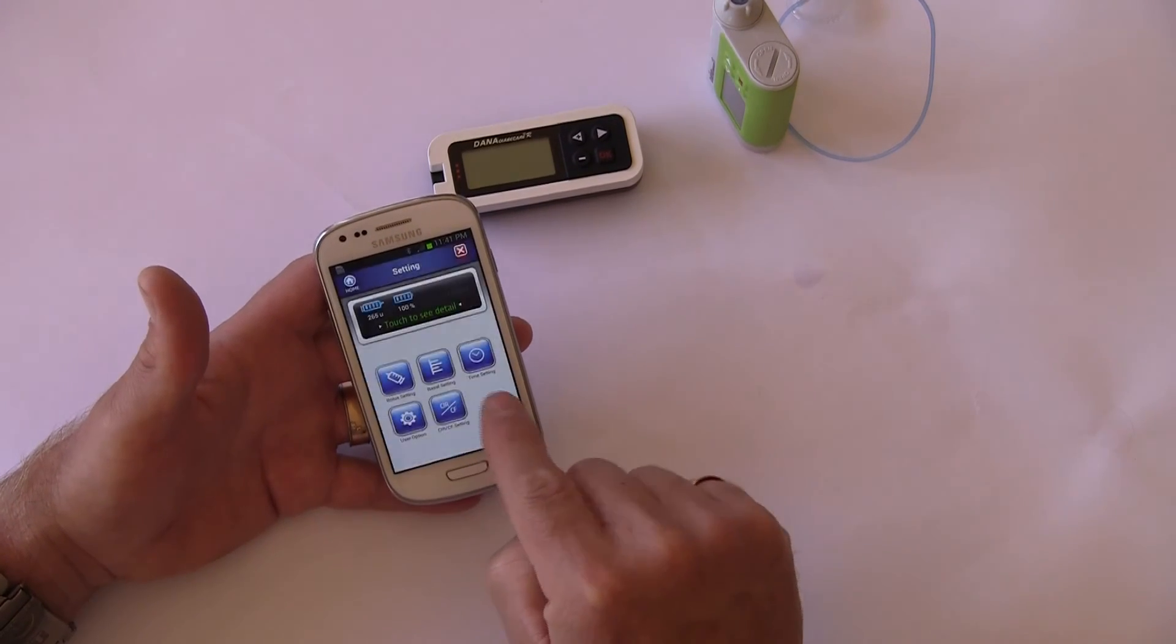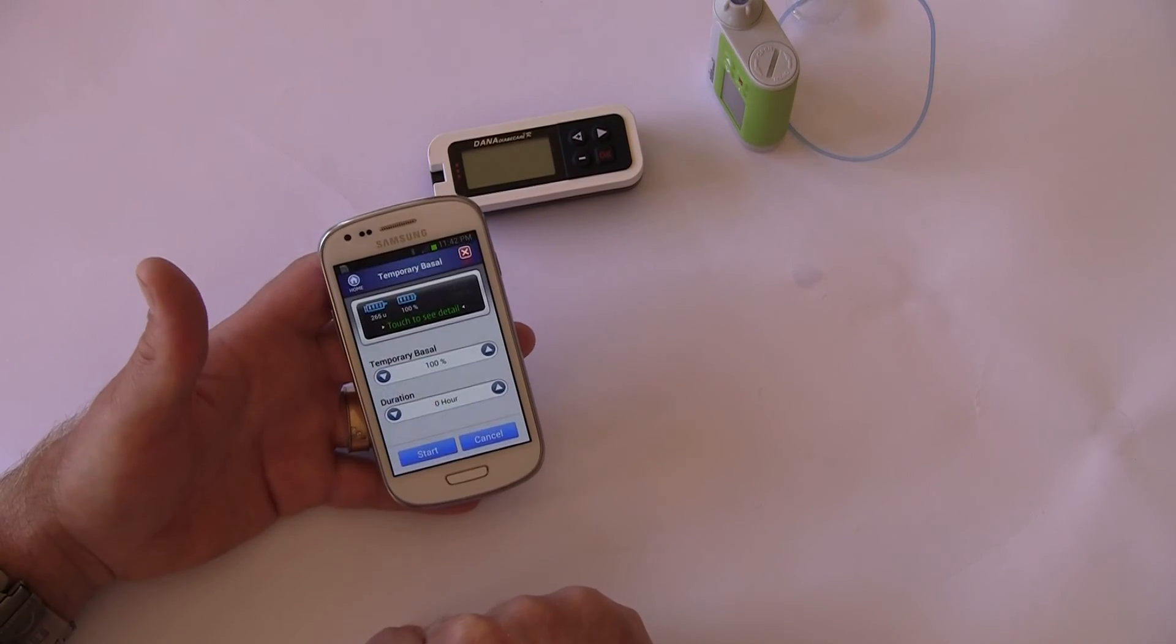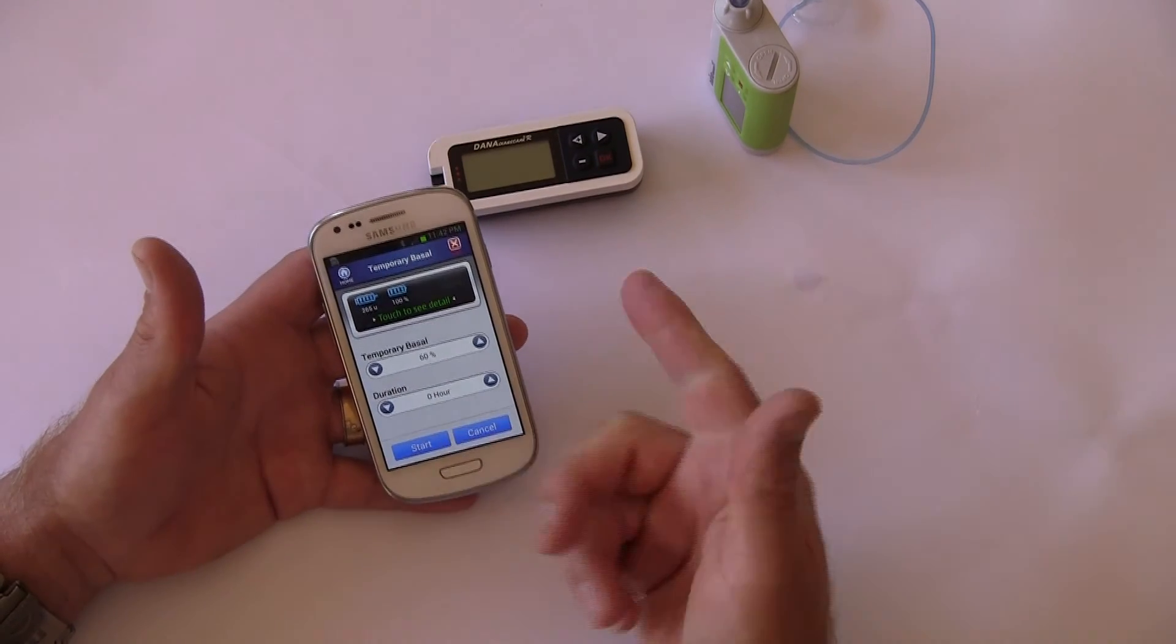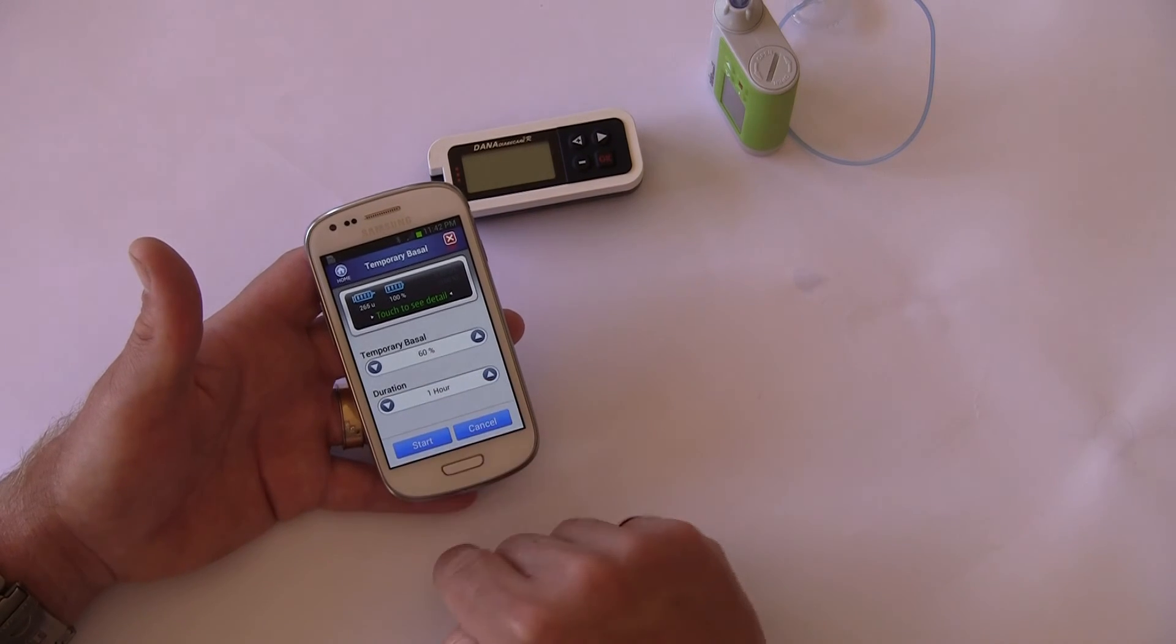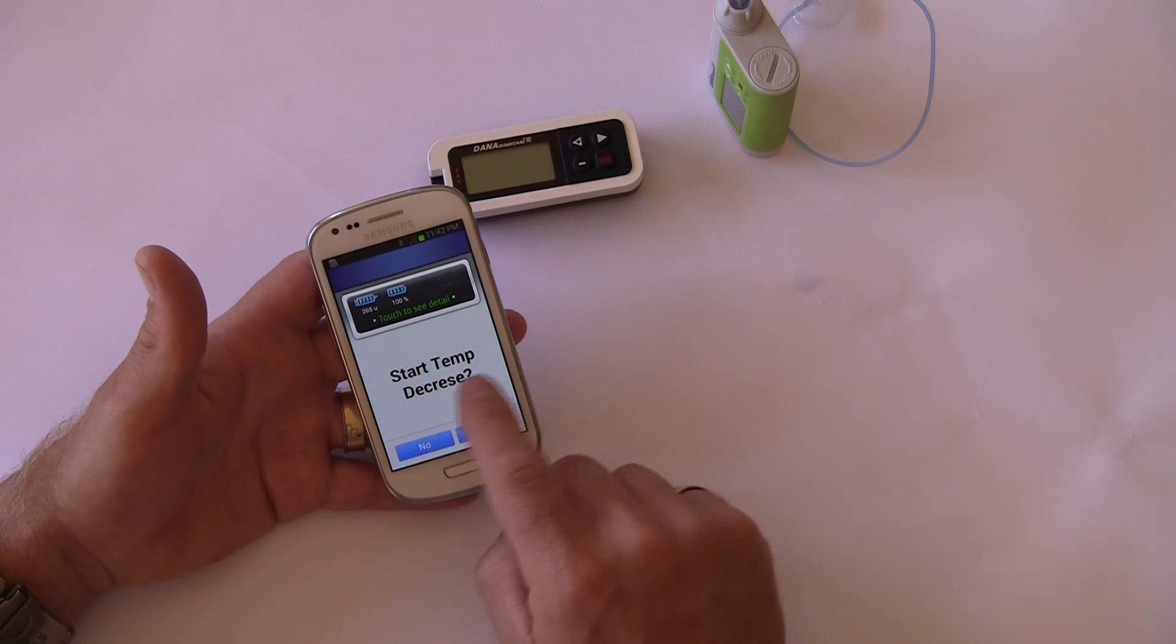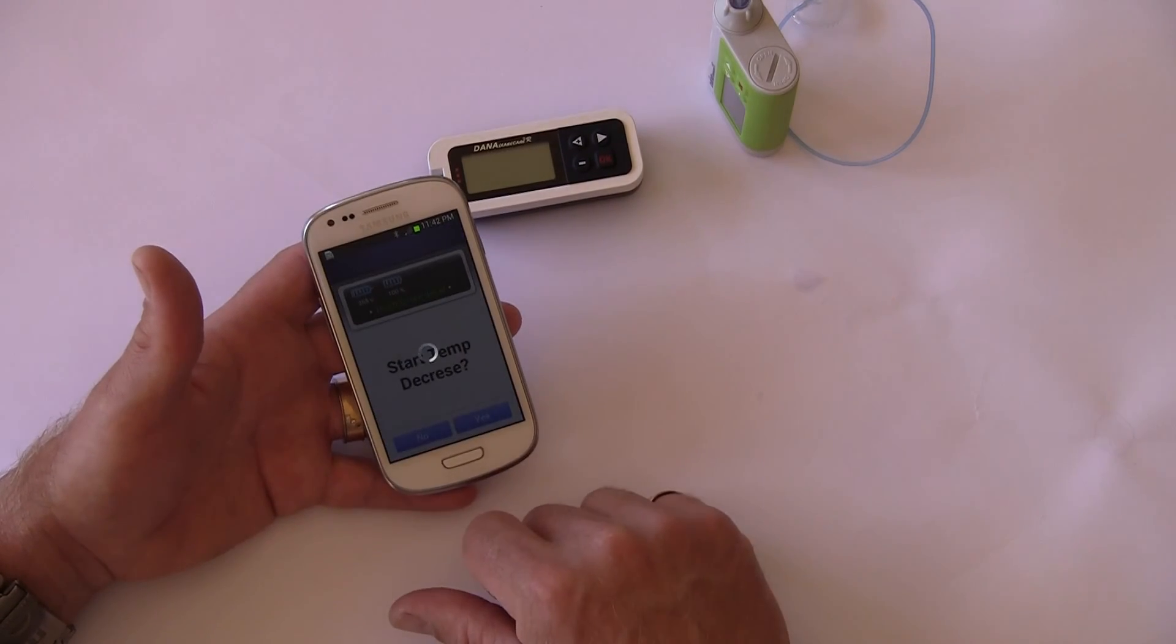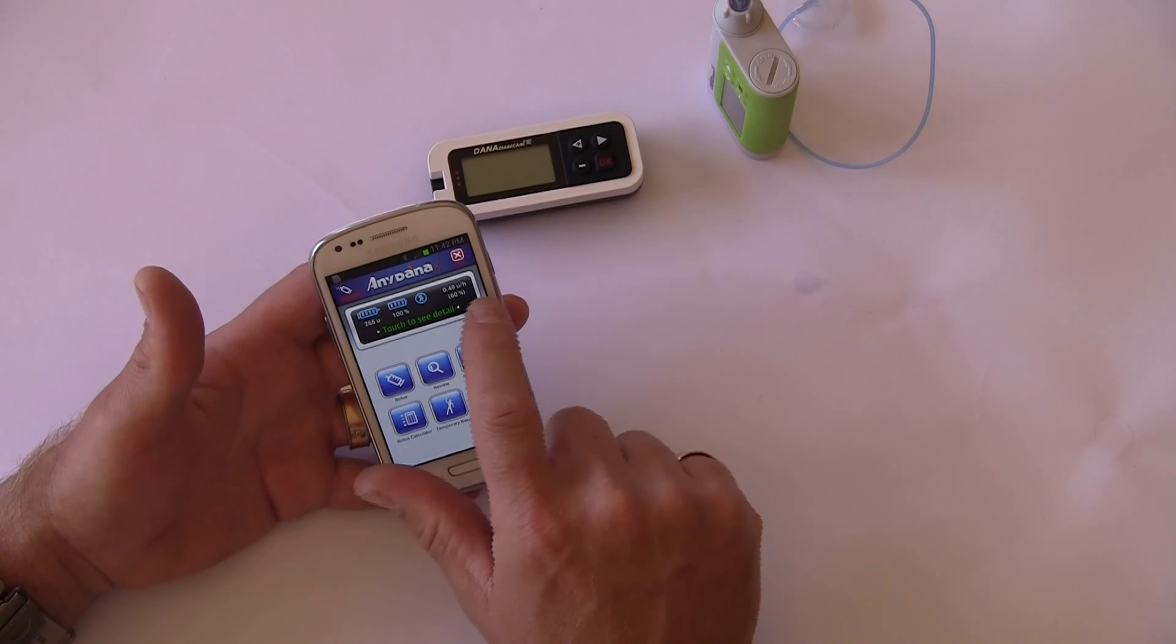I might choose to start a temporary rate. If I was going to walk home from the cafe, I might choose to dial this down from 100% delivery, which is normal standard basal delivery, to perhaps 60%. I say it's going to take me an hour to walk home, so I can say one hour delivery, start temporary decrease. The pump is suggesting to us that we're decreasing the basal. Yes, we are.